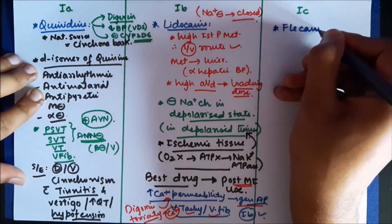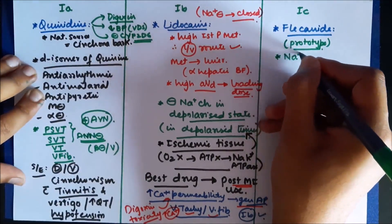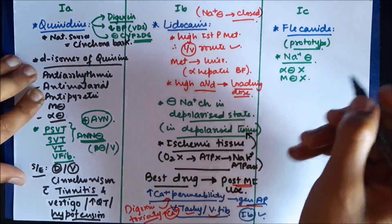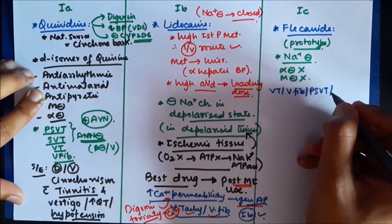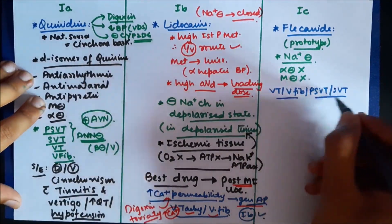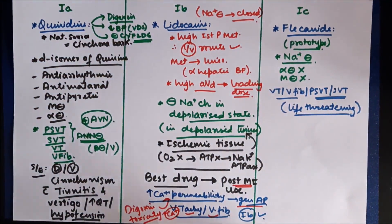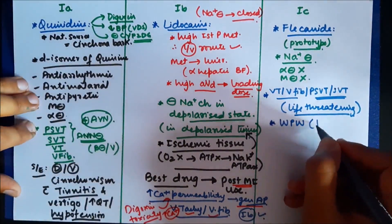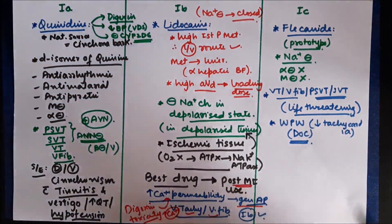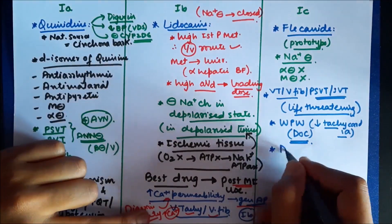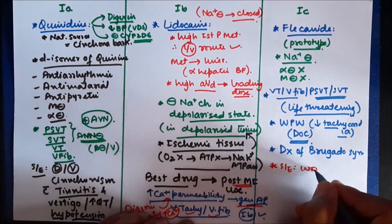In Class 1c, an important drug is flecainide, the prototype and most preferred drug of this class. It blocks sodium channels in the open state and does not have alpha-blocking or muscarinic-blocking properties. Flecainide can be used in ventricular tachycardia, ventricular fibrillation, paroxysmal supraventricular tachycardia, and supraventricular tachycardia — Class 1c drugs are used when these conditions become life-threatening or refractory. It is the drug of choice in Wolff-Parkinson-White syndrome for decreasing tachycardia when not associated with atrial fibrillation, and is also used for the diagnosis of Brugada syndrome.